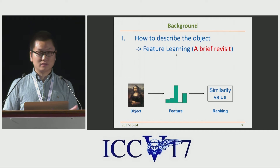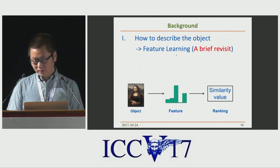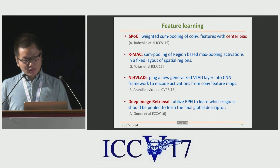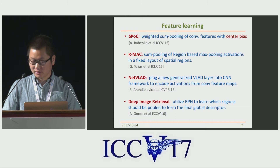Most recent algorithms about feature learning focus on the use of CNN. Some clean datasets are collected for training the network. A lot of focus is on how to get an image-level descriptor. Several representatives are SPOC, RMAC, NetVLAD, and deep image retrieval.